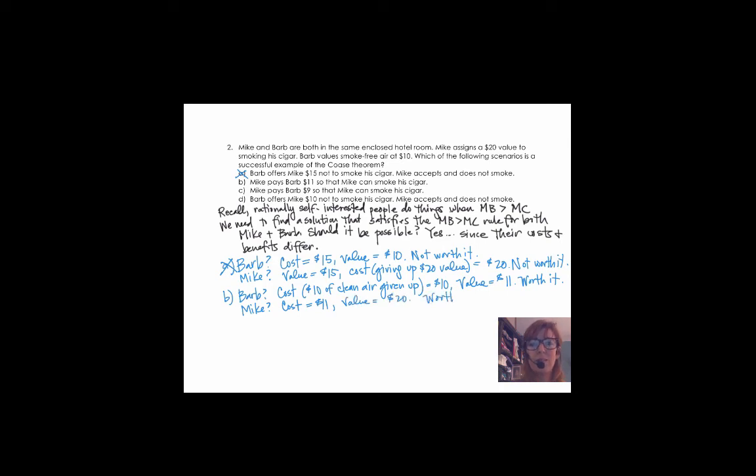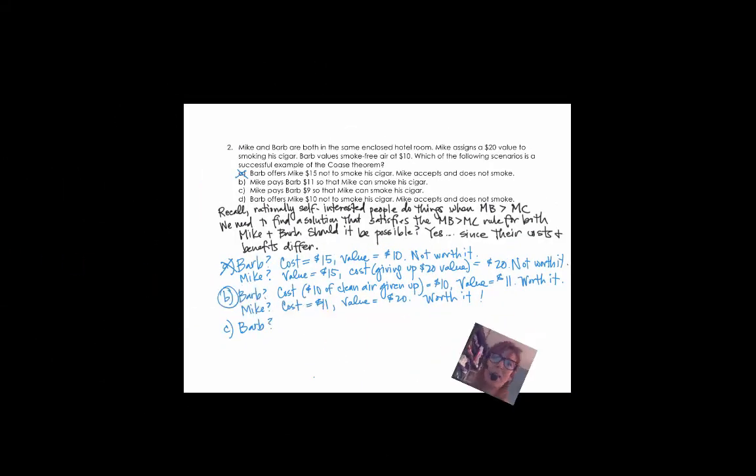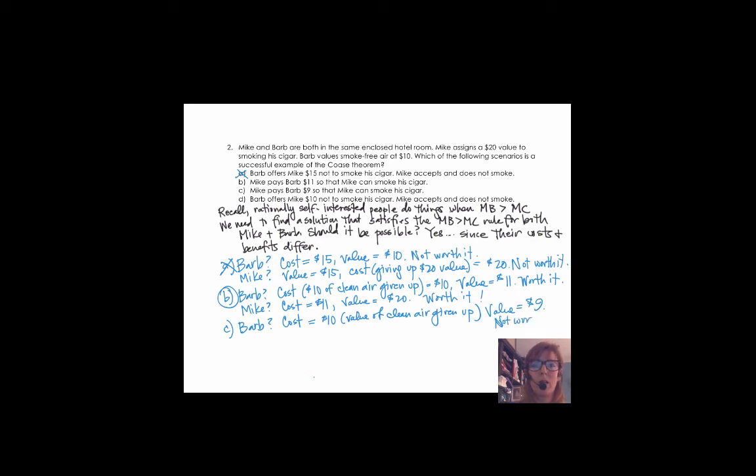In C, Mike offers to pay Barb $9. The cost to Barb is the $10 of clean air she's giving up, and she's compensated only $9. So the cost is higher than the value to her. Not worth it. For Mike, the cost is $9, and the benefit is the $20 he's going to get from smoking, so for him it is worth it. But C is not going to work for both sides, so it's not going to be a solution.